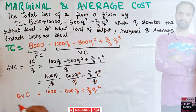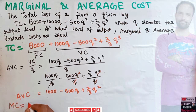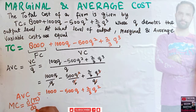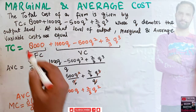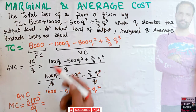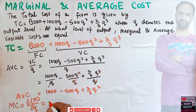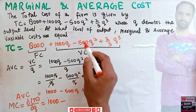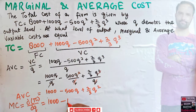Marginal cost is simply the derivative of total cost with respect to output. The derivative of the constant 8000 is zero. The derivative of 1000Q is 1000. The derivative of -500Q² is -1000Q.